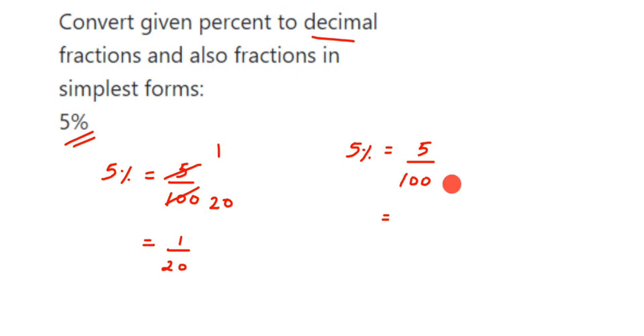You have to count the number of zeros in the denominator. I have only two zeros, so after two digits from the right side, you have to put the decimal. So 5, and there are no more digits, right? So I am going to put 0 and then the decimal point and then 0. That's it, so this is the decimal form: 0.05.